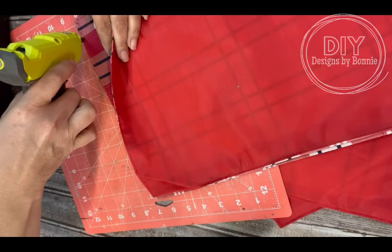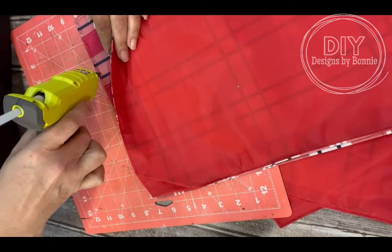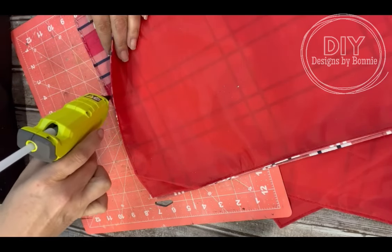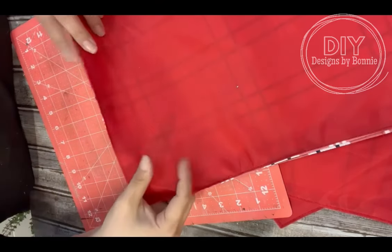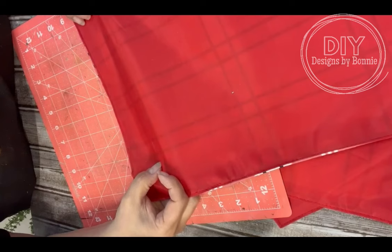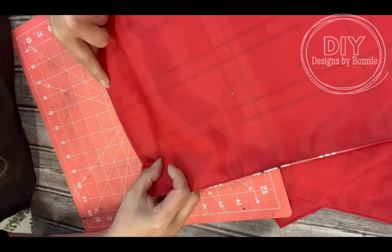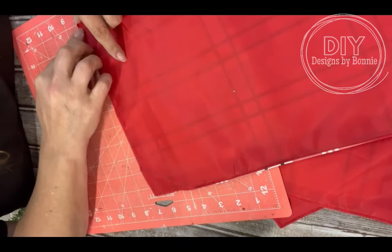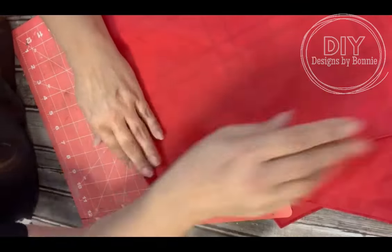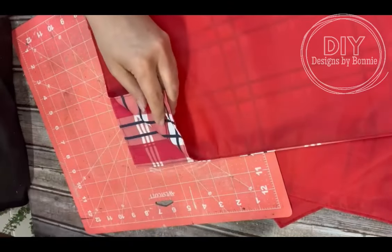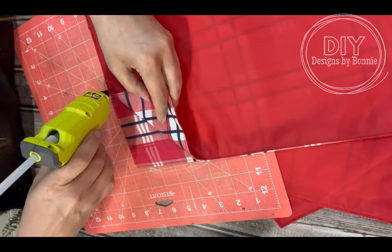We're going to start by hot gluing. I'm just using regular old hot glue, not the fabric one. I'm doing two right sides together for this first method because we're going to do multiple ways of adhering it. We're going to attach all four of the placemats with right sides together.